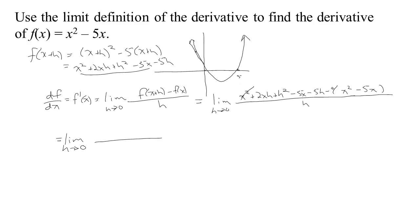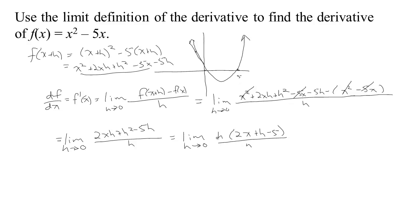Now if we simplify, there's an x squared here and a minus x squared, so those cancel. There's a minus 5x here, and minus minus 5x would be plus 5x, so those cancel too. So really what we have in the top is 2xh plus h squared minus 5h, all over h. Taking the limit as h tends to zero, if I factor the h out of the top, I get h times (2x plus h minus 5), and the h in the bottom cancels. So we're really looking at the limit as h tends to zero of 2x plus h minus 5. As h gets closer and closer to zero, the h disappears, and we're left with 2x minus 5.